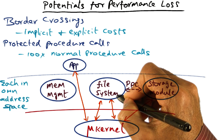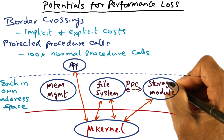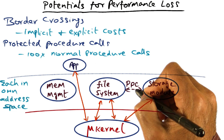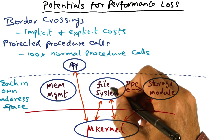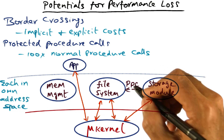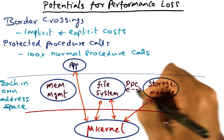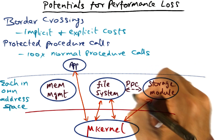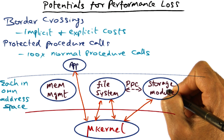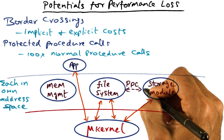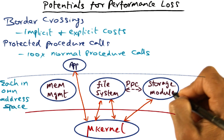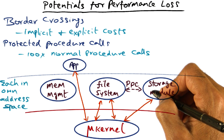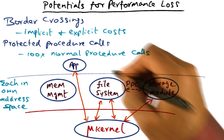A system service like file system may have to consult other services such as a storage module or a memory management module in order to complete the requested service of the application. In which case there are going to be protected procedure calls executed between services that are part of the operating system. And these protected procedure calls, because they are going across address spaces, are going to be more expensive than simple or normal procedure calls.